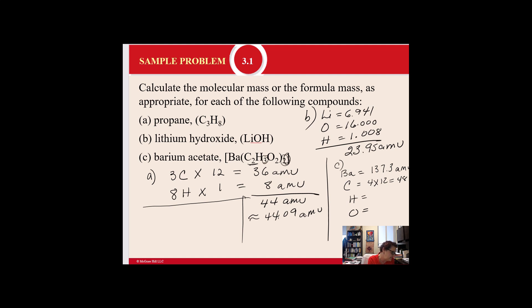And so when I add all of that up, I should get 255.4 AMUs as the formula mass for barium acetate. So that's how you work them. So go back and look again. It's tricky when you have a parentheses around something, so just make sure that you pay attention to that, that you're going to multiply what's inside that parentheses.